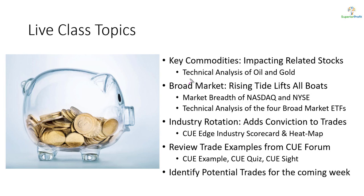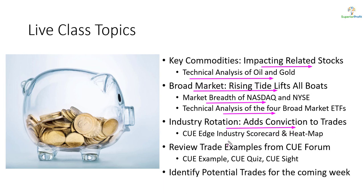In today's topics, we will look at the commodities oil and gold using technical charts, as they tend to impact related stocks. When swing trading stocks, we like to align the trades in the market's direction. We will study market direction using NASDAQ and NYSE market breadth and technical analysis of the market ETFs. In addition, we like to align trades with industry strength, studied using a scorecard and heatmap. We may also look at recent trade ideas from our traders forum and look for potential trades for the coming week.